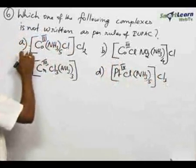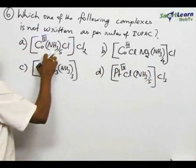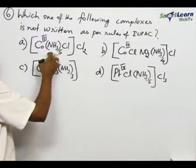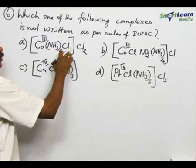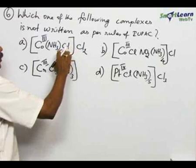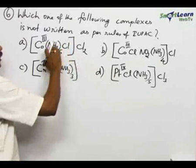And here what happened? In complex A, that neutral ligand is written immediately after the central metal ion. And the negative ligand, that is chloro or now it is called chlorido, that is written after the neutral ligand.